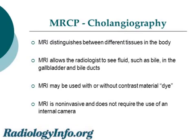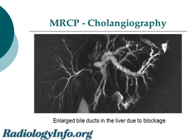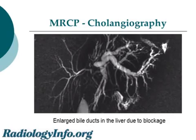One of the major advantages of MRCP over other, more invasive methods of imaging of the bile ducts is that the images can be taken from the outside of the patient. Here is an example image of an MRCP. The white lines that you see are bile-filled ducts in the liver. In this example, some are bigger than others because they are blocked.